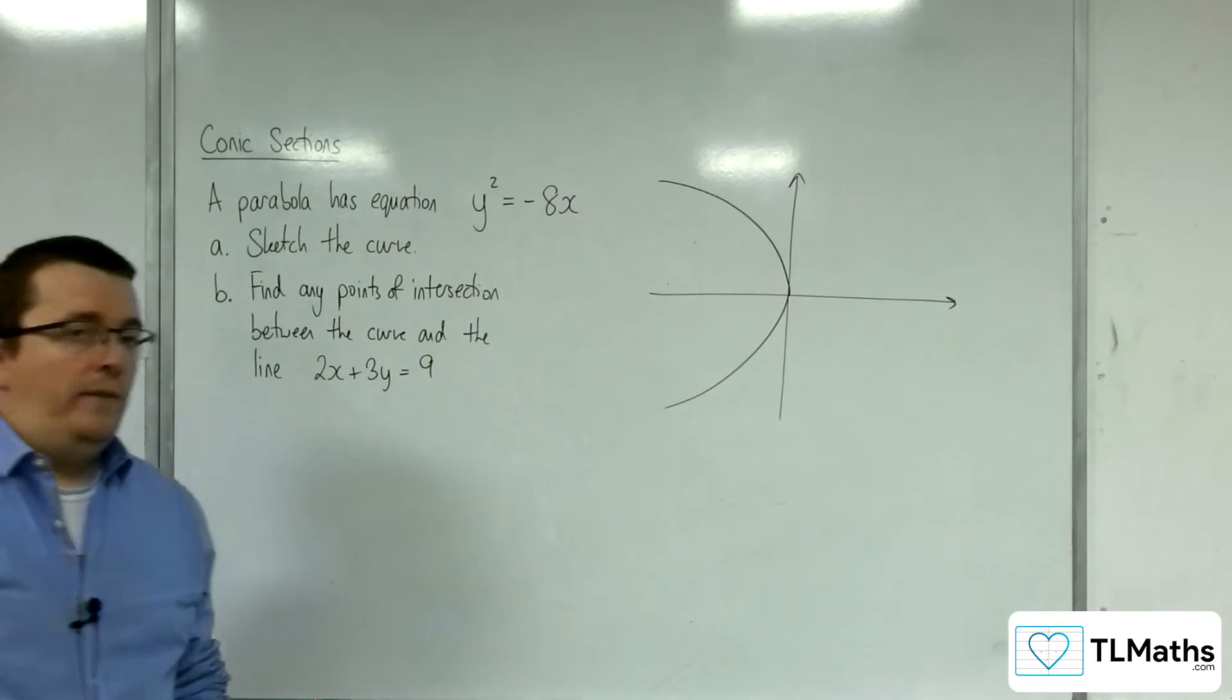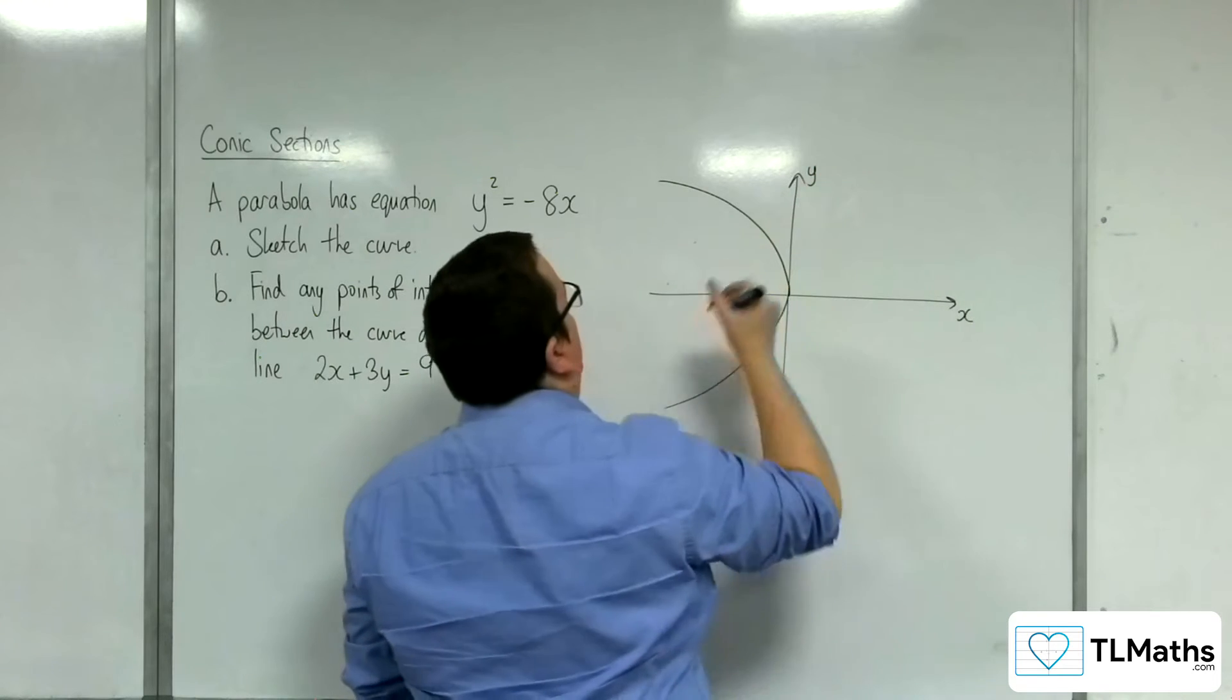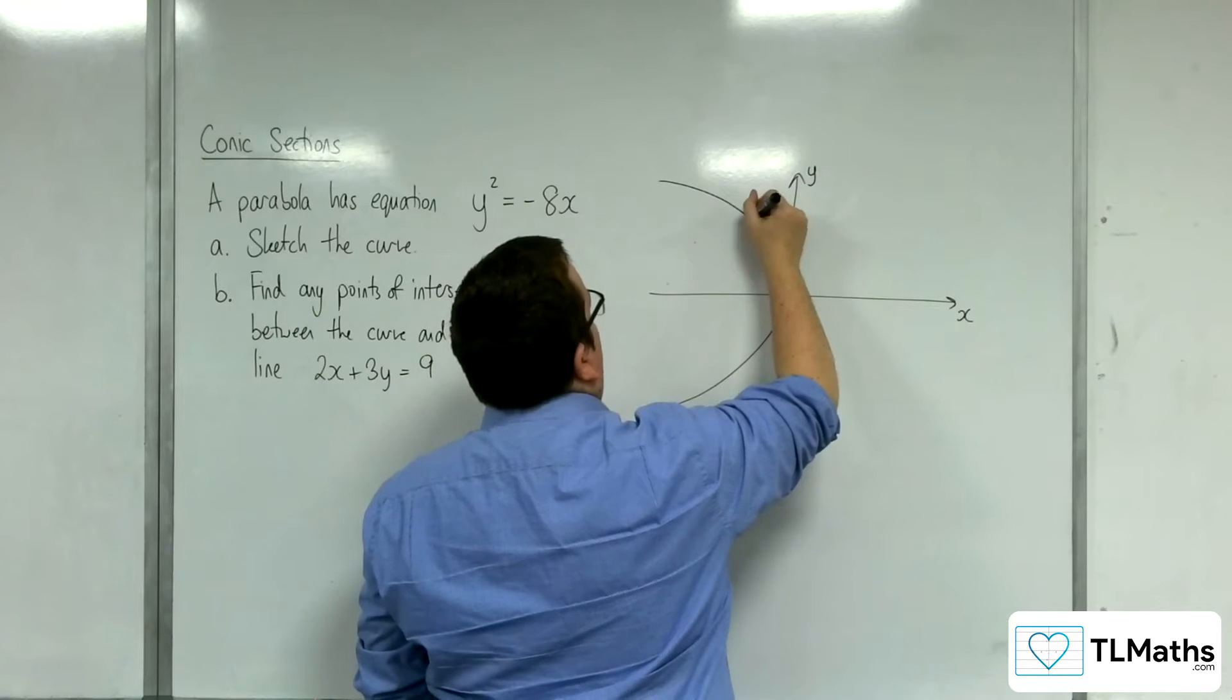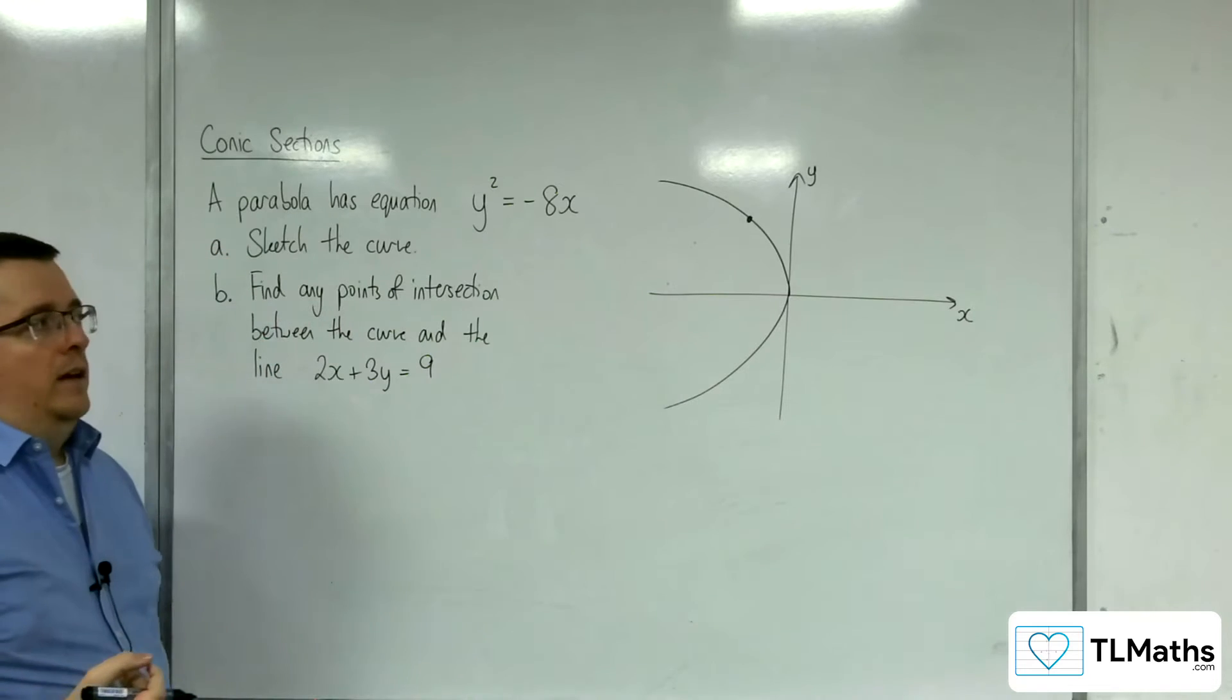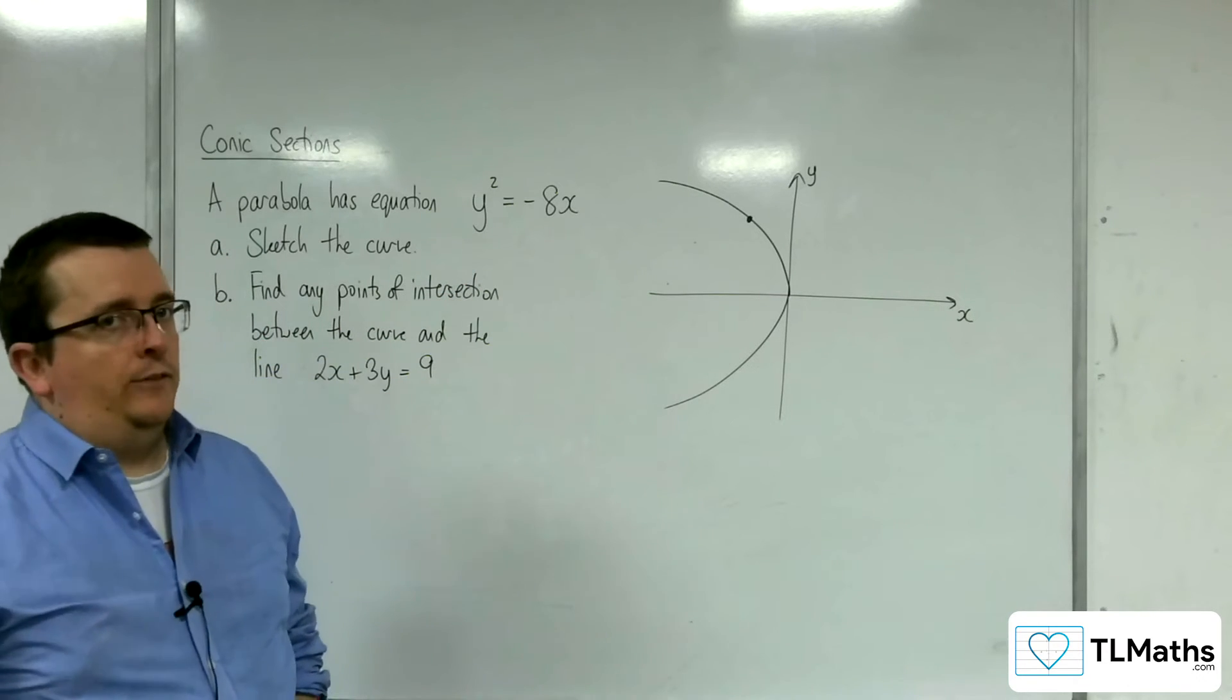And just like I did in the previous video, I would probably choose a point of reference just to kind of make it identify as this curve rather than y squared equals minus 100x, for example.